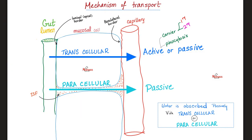We have two main mechanisms of transport. You can go through the actual mucosal cell — called transcellular, through the cell. Or you can go between one cell and the next — parallel to the cell — called paracellular. The paracellular route is always passive, meaning no energy needed, no ATP required. But the transcellular route could be active or passive.